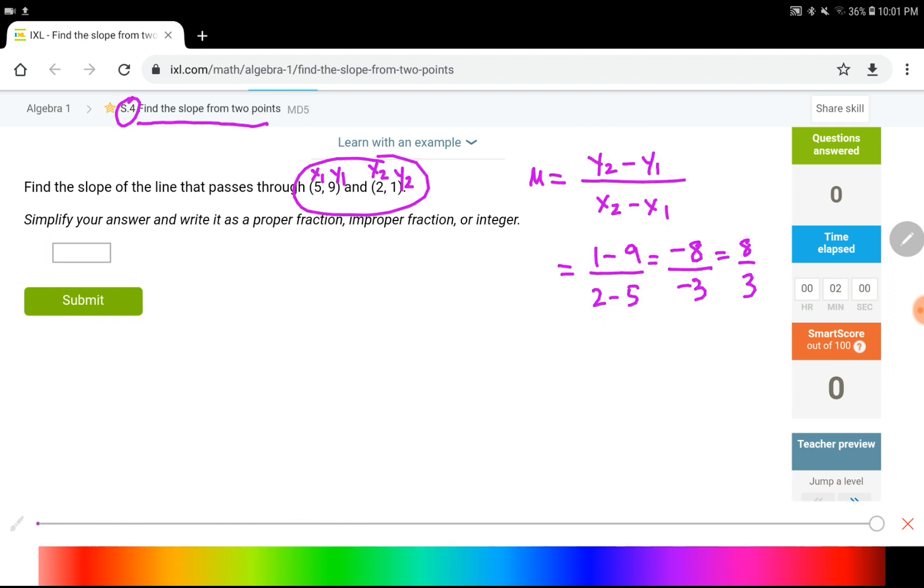Simplify your answer. Let's just finish reading the instructions. Directions: simplify your answer, write it as a proper fraction, improper fraction, or integer. Our answer would be 8 over 3.